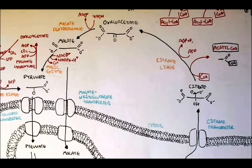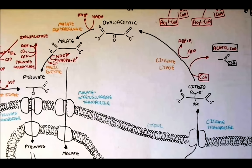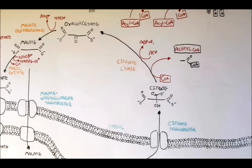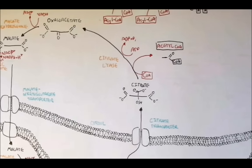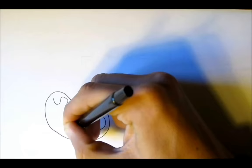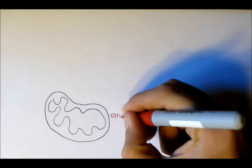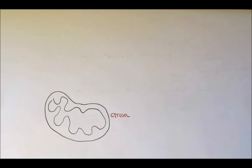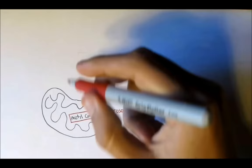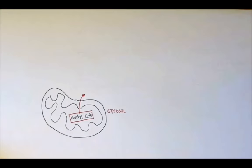Carrying on from the previous video, we learned how acetyl-CoA was transported from the mitochondria into the cytosol. Fatty acid synthesis, which is the discussion of this video, occurs in the cytosol and begins with acetyl-CoA. That is why acetyl-CoA was transported out of the mitochondrial matrix into the cytosol.